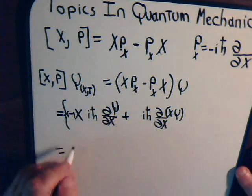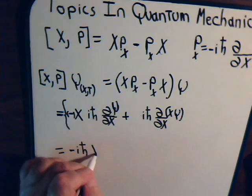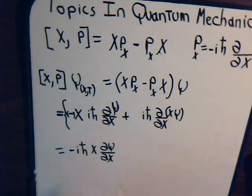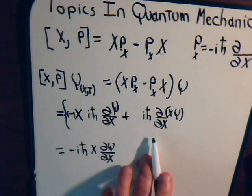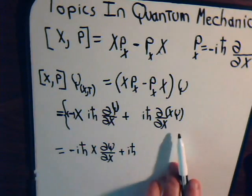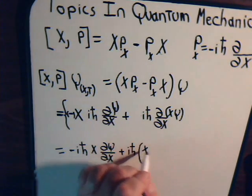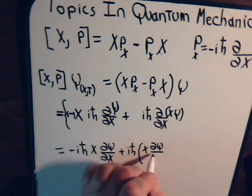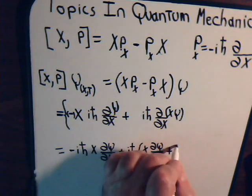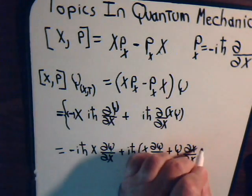So let's see what this gives us. Here we have this will equal minus i h-bar, x, the partial of psi with respect to x, and from here we have plus i h-bar, and now we're going to take the derivative of a product, so we will have here we'll have x times the partial of psi with respect to x plus psi times the partial of x with respect to x.